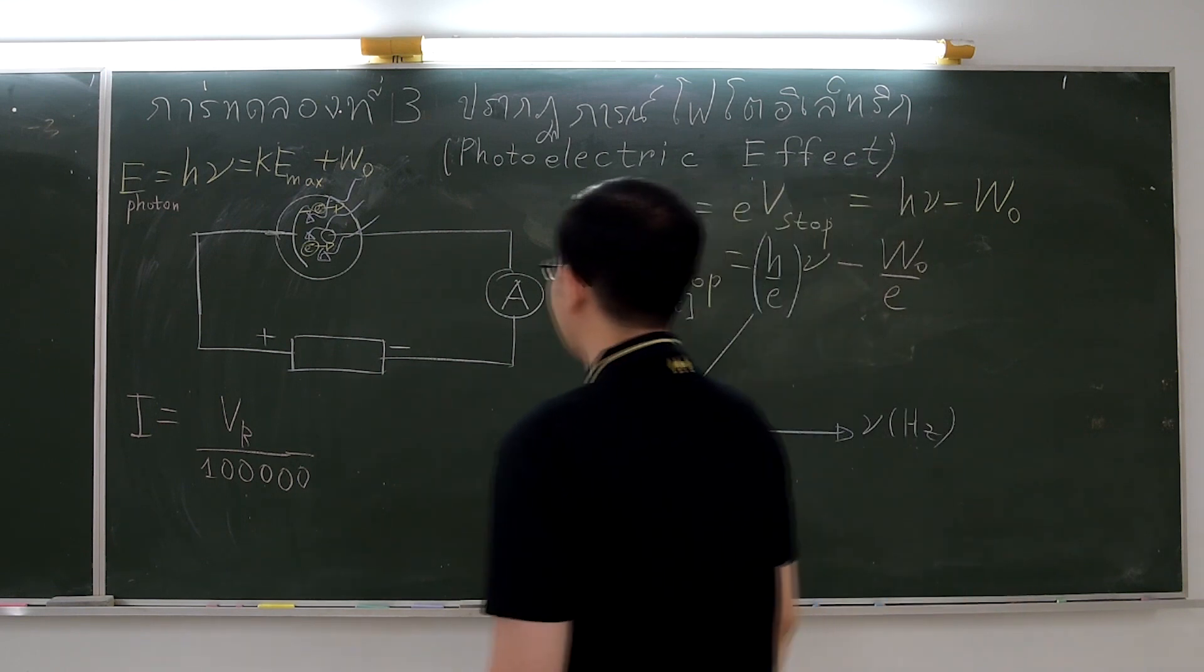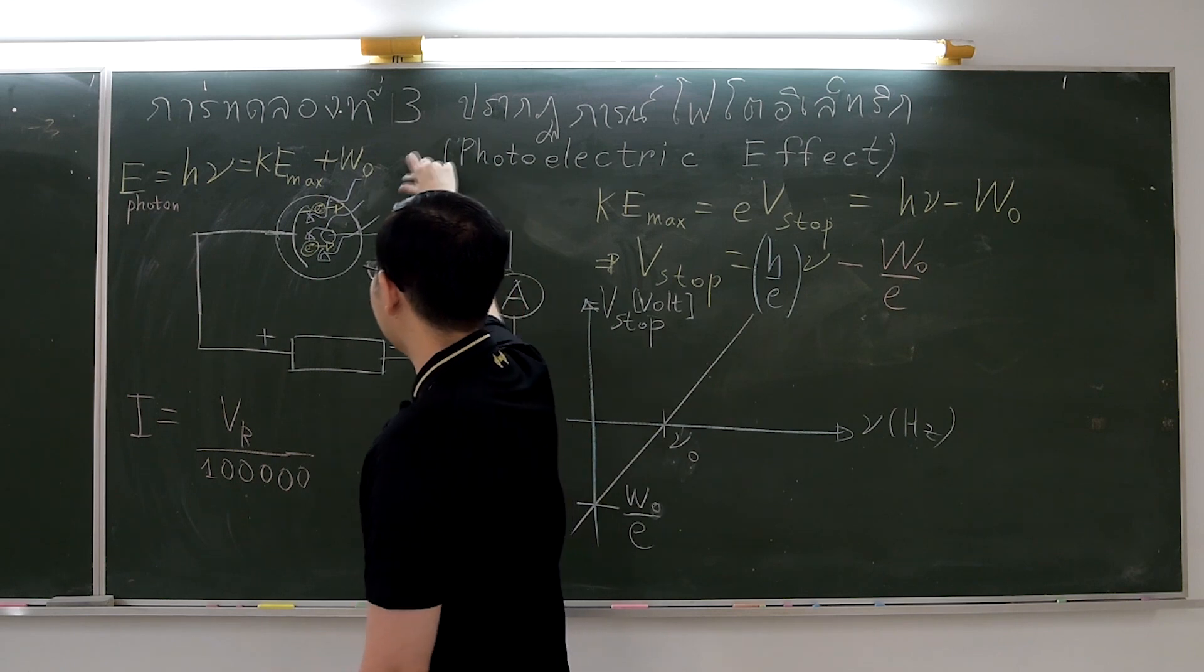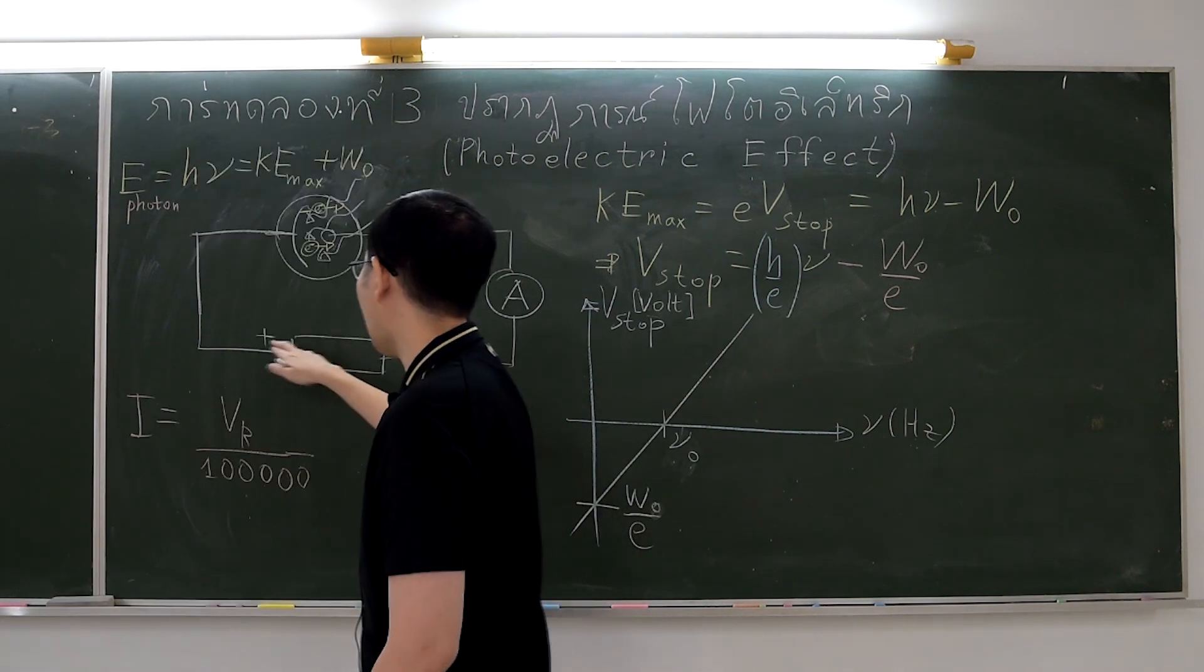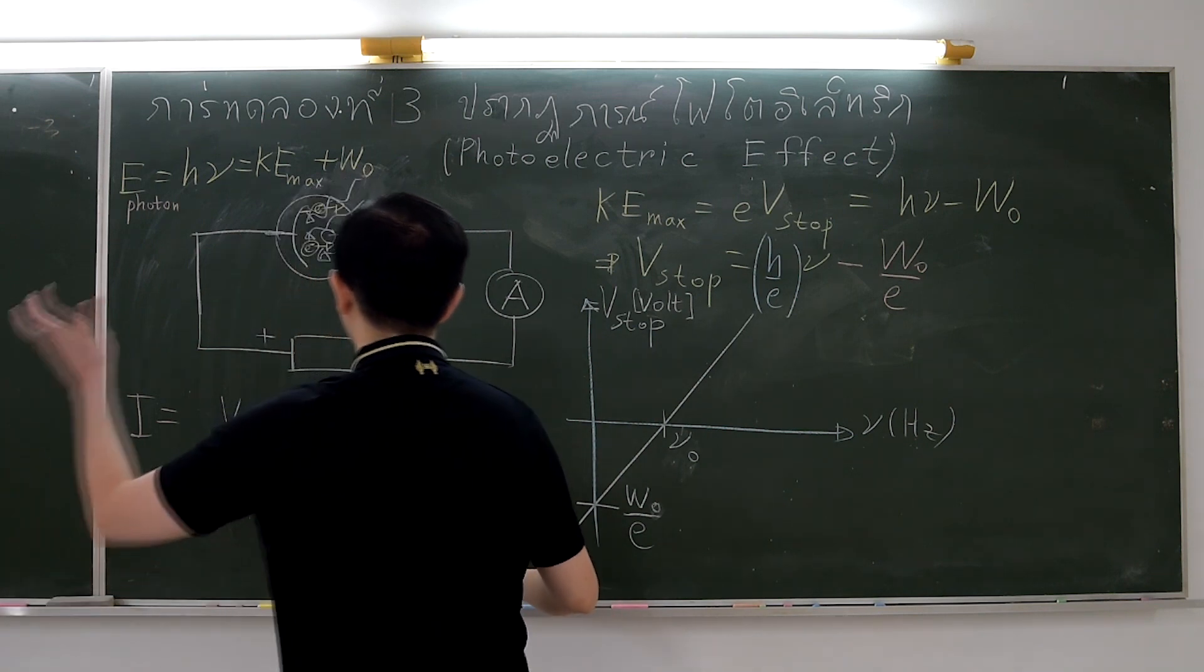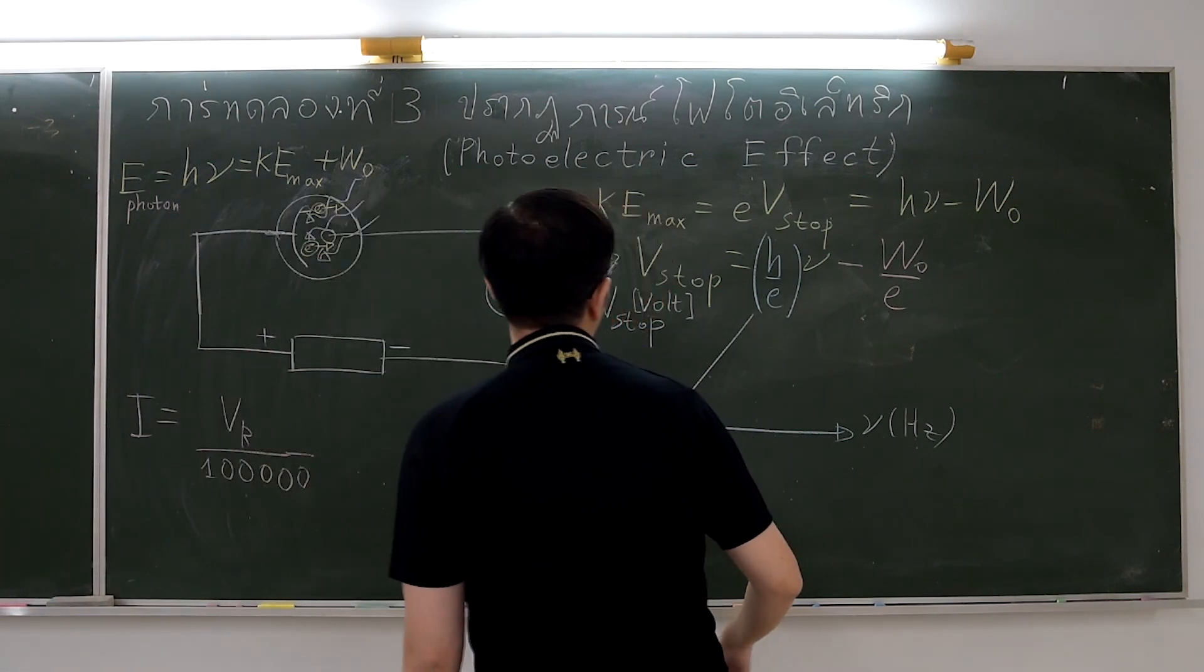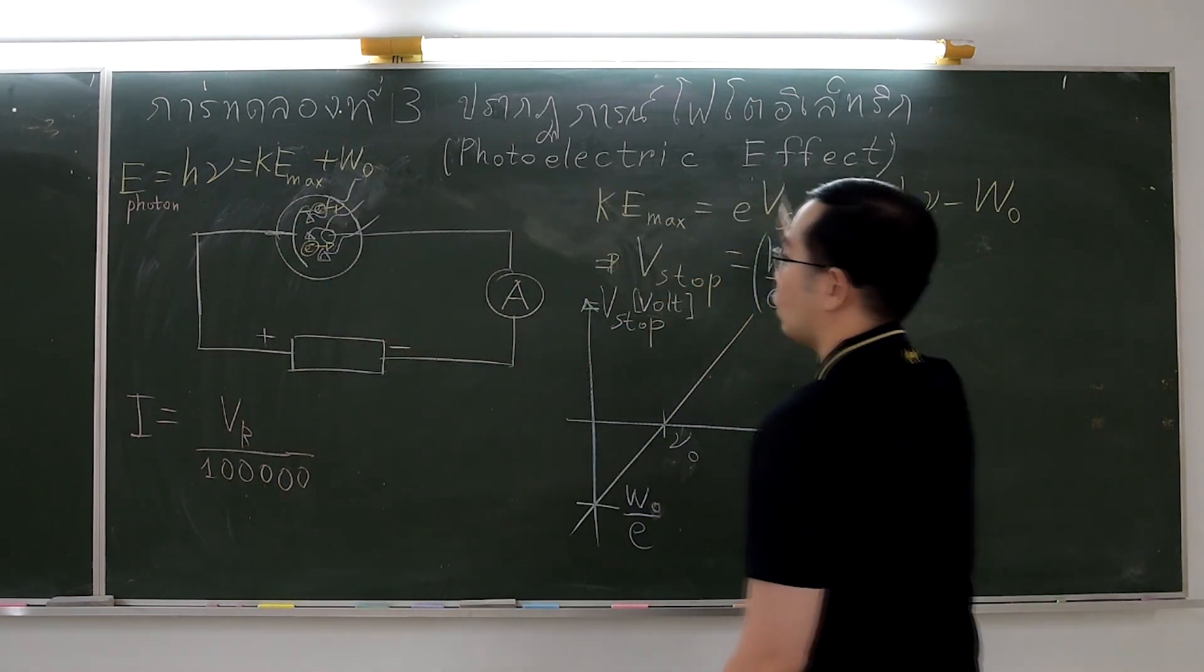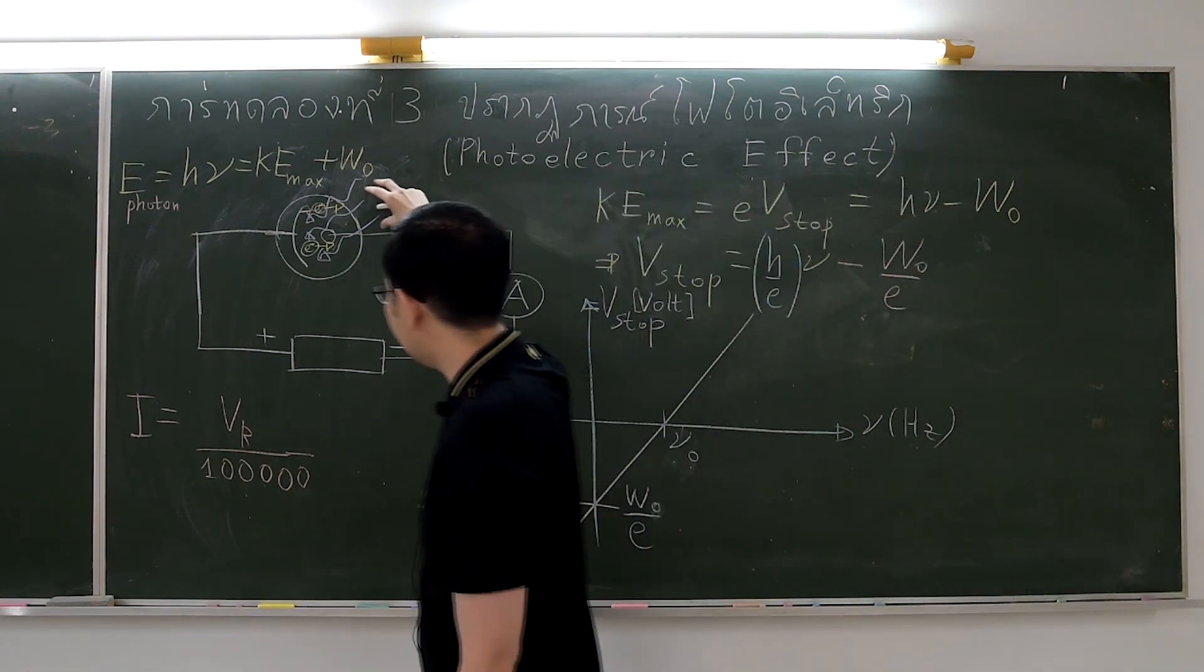In this experiment, we will illuminate light onto the metal surface. Then the electrons will be emitted from the surface and cause current in the circuit. We will apply reverse bias potential to the circuit, which can retard or stop the photoelectron motion. This potential equals the maximum kinetic energy of photoelectron and is called stopping potential. We will find the correlation between the stopping potential and the light frequency.